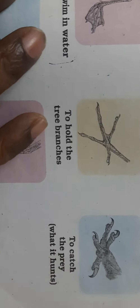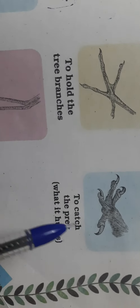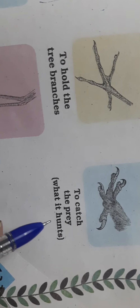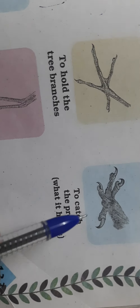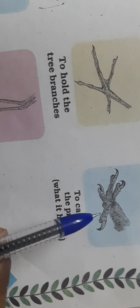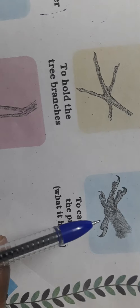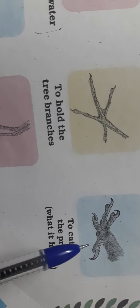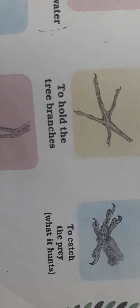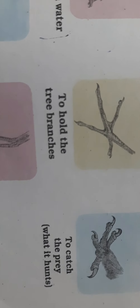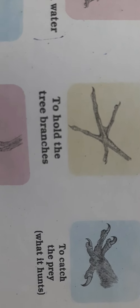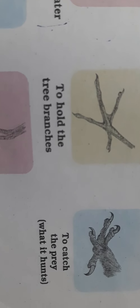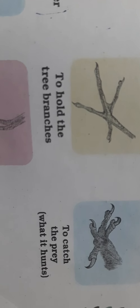Some birds use their feet to hold tree trunks, and some birds — like the eagle — are carnivores. They are animals who hunt, and their feet are adapted for that purpose.